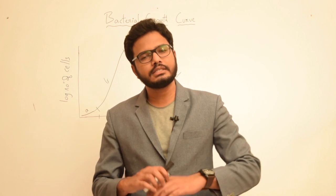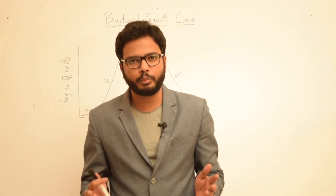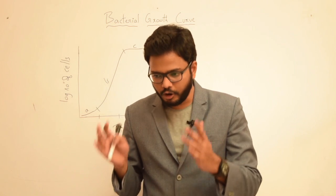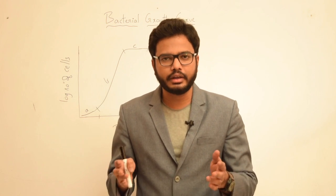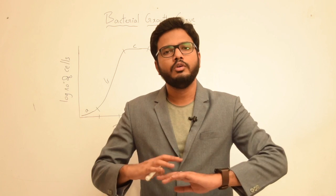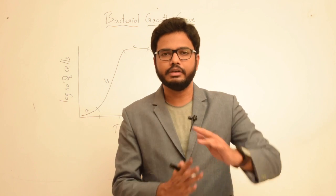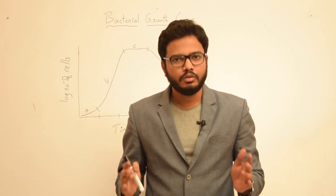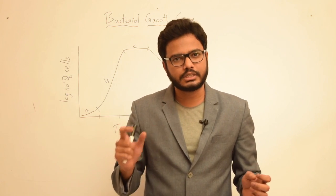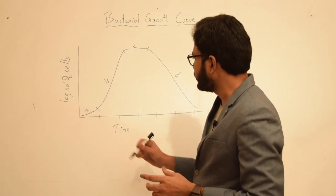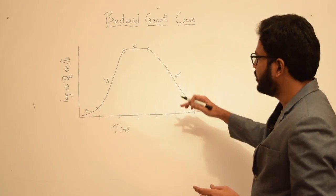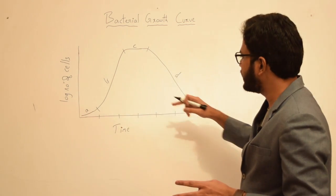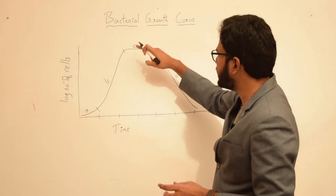Bacterial growth curve reflects changes in events within the bacterial population when they are grown in a closed system — for example, when you inoculate bacteria in a test tube or petri dish containing some nutrient medium. We find a characteristic cycle of events happening within this bacterial population, which we term the bacterial growth cycle. On this graph, the x-axis shows time plotted against the y-axis showing the number of cells.